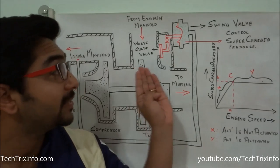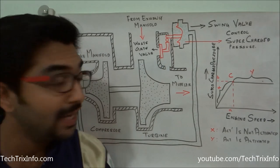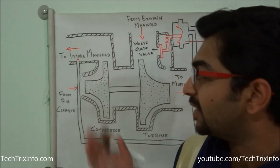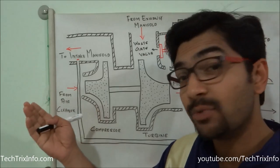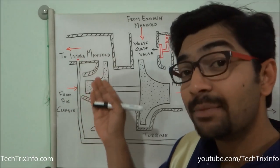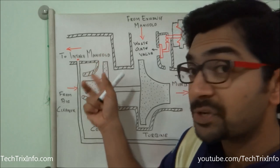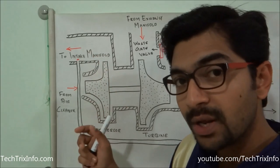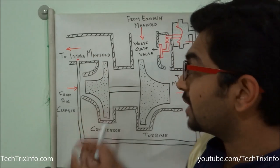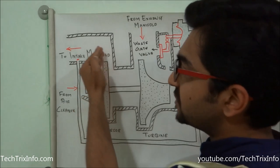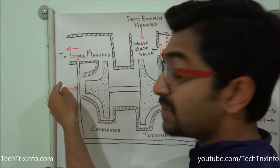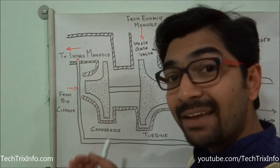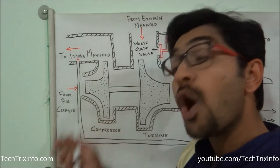Now let's see where the wastegate valve comes into picture. The compressor is sucking air from the atmosphere, compressing it, and giving it to the intake manifold, so we have more pressure here. If this pressure increases above the recommended level that the engine can handle, it may overload the engine — when the compressed air goes into the combustion chamber and exceeds the recommended pressure level, that will overload the engine.